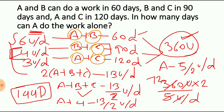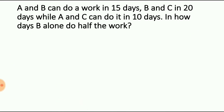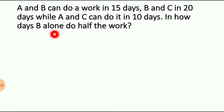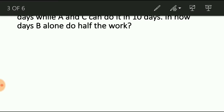Let us enter into question number 2. A and B can do a work in 15 days, B and C in 20 days, while A and C can do it in 10 days. In how many days can B alone do half the work? Here we have to find the total number of units to be completed by LCM and then reduce it to half.